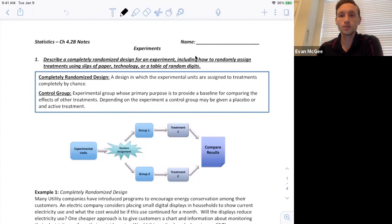This is the first 4.2b video. We're going to look at what's called a completely randomized design for an experiment. In the previous videos we talked about how to randomly assign treatments using slips of paper, technology and the table of random digits.